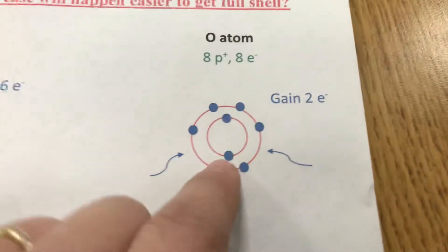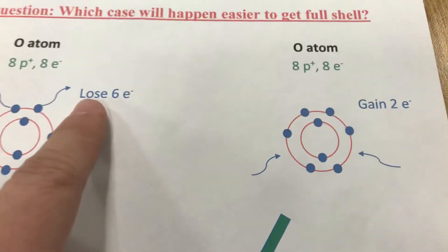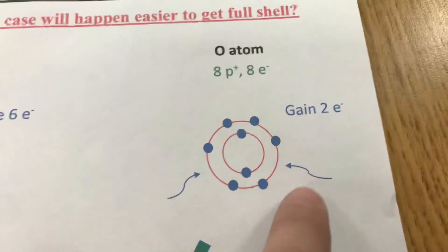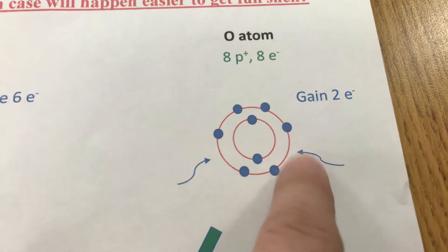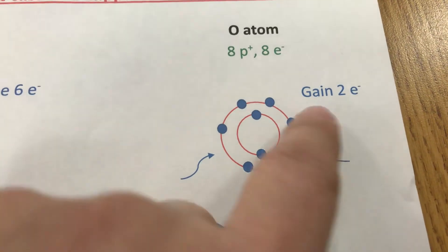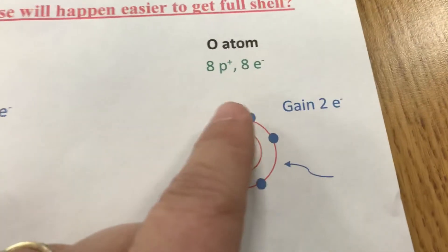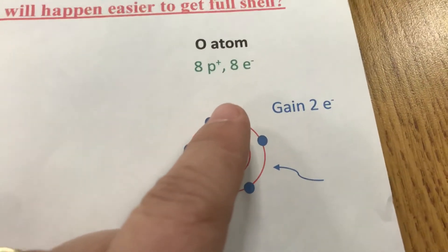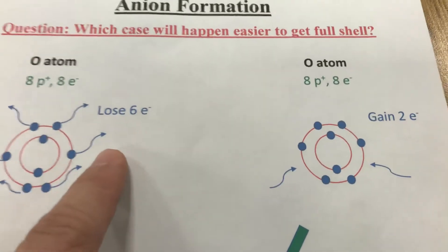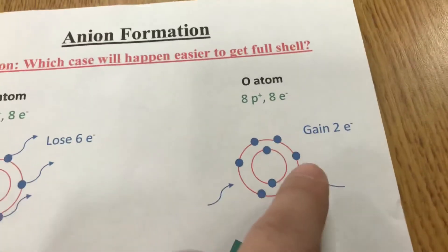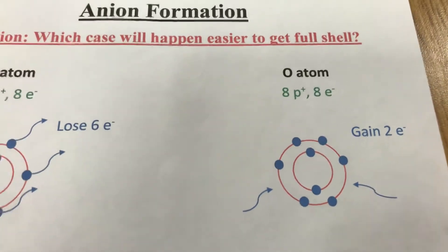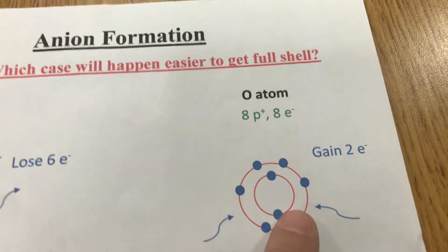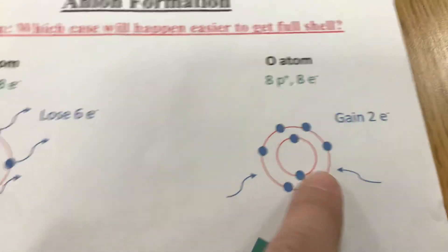The second situation is: instead of losing six electrons, I will gain two. Gaining two will give me one, two, three, four, five, six, seven, eight — I will get eight electrons, full shell. Now: lose six electrons versus gain two electrons — which case will happen easier? Of course it's gaining two electrons, because it takes less energy.